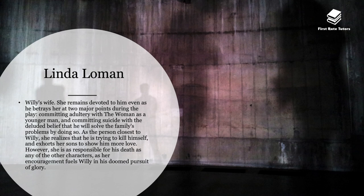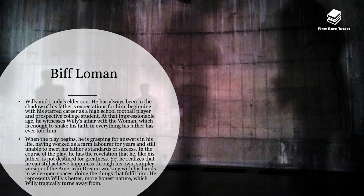The other key character is Linda Loman, Willy's wife, who remains devoted to him even as he betrays her at two major points — committing adultery as a younger man and committing suicide with the deluded belief that he will solve the family's problems by doing so. As the person closest to Willy, she realises he's trying to kill himself and exhorts her sons to show him more love. However, she's as responsible for his death as any other character, as her encouragement fuels Willy in his doomed pursuit of glory.